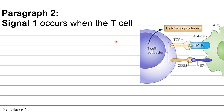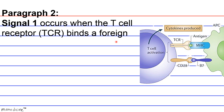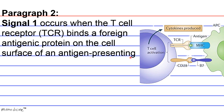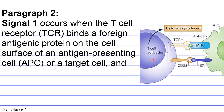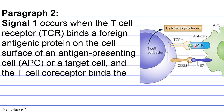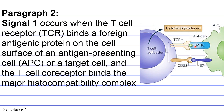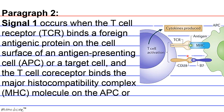Paragraph 2. Signal 1 occurs when the T-cell receptor (TCR) finds a foreign antigenic protein on the cell surface of an antigen-presenting cell (APC) or target cell, as shown here. The T-cell co-receptor binds the major histocompatibility complex (MHC) molecule on the APC or target cell, as shown here. This entire interaction is illustrated in Figure 1.